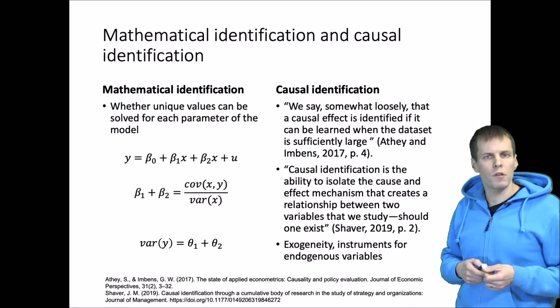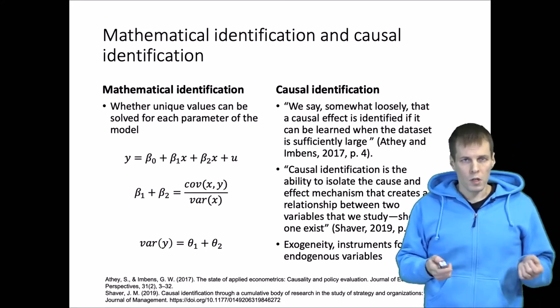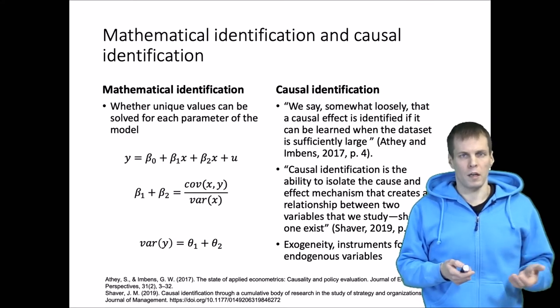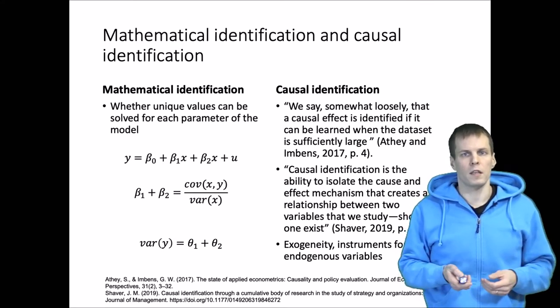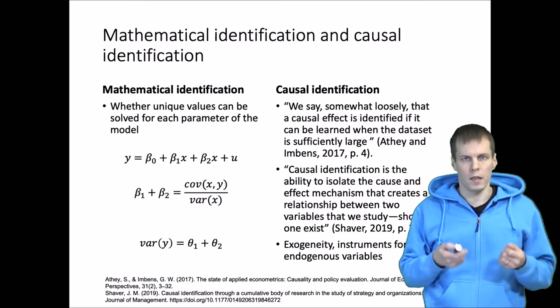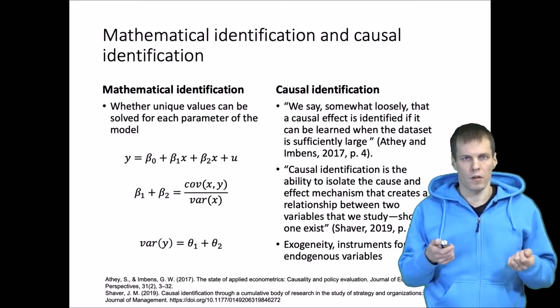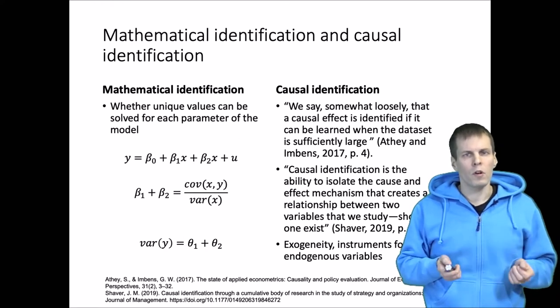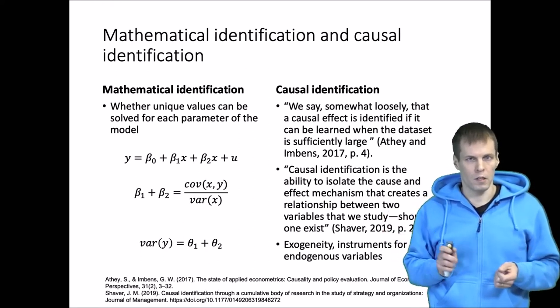Some operational definitions of causal identification say that for each endogenous variable you have a sufficient number of exogenous variables that are guaranteed to be valid instruments. I'm not going to talk about causal identification in this video.